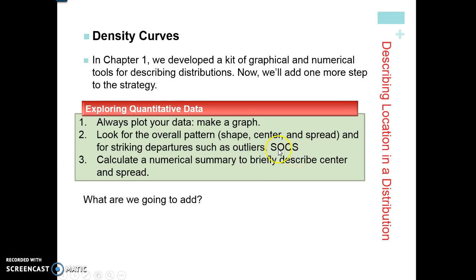We're always going to look for overall patterns: what's the shape of the graph — is it skewed right, skewed left, approximately normally distributed, symmetrical? Where's the center? We'll have to make decisions about the mean versus the median. What is the spread — the standard deviation or IQR? And we look for anything outside the ordinary, such as outliers. When you identify outliers, think about why it's a potential outlier and whether to include it. Most of the time you include outliers unless there's a major reason not to, and then you'd always explain why.